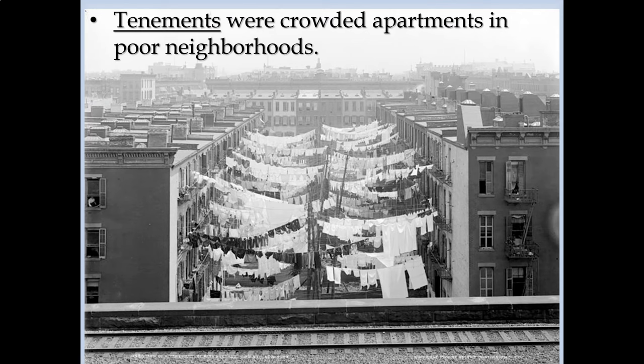As we get into the late 1800s and early 1900s, you would see tenements popping up in major urban areas like New York City or Chicago. Tenements tended to be these crowded apartment buildings found in very much working class, poor neighborhoods. They tended to range from four, five, six, to seven stories tall — very tightly packed and crowded. But this was a place the working class could afford to live.